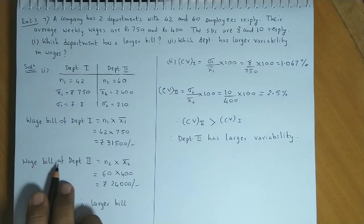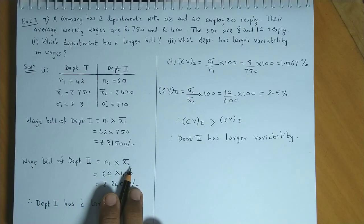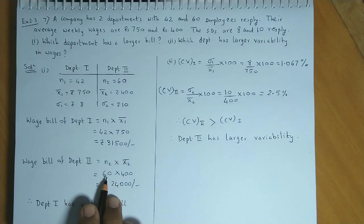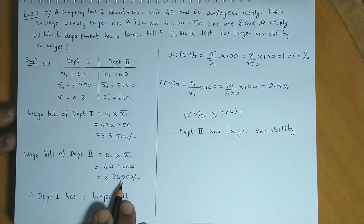Next, wage bill of Department 2, that is n2 into x2 bar. Department 2 has 60 employees and their average salary is 400, so total wage bill will be 60 into 400, that is 24,000.